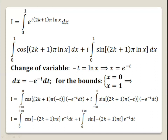Canceling the negative sign and changing the order of integration, we get I equals the integral from 0 to plus infinity of cosine of minus (2k+1) pi t times e to the power minus t dt, plus i times the second term with sine instead of cosine.